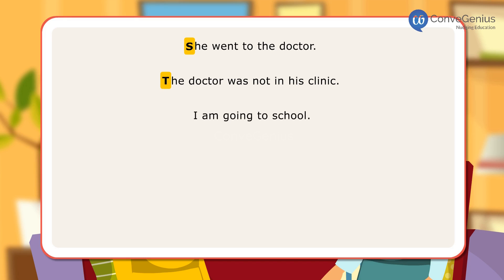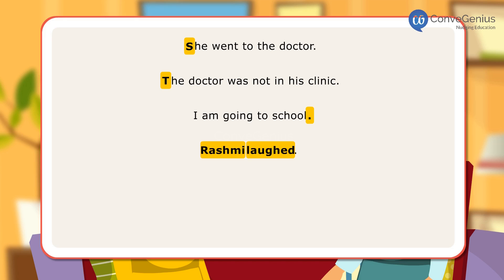There is always a punctuation mark at the end of a sentence. For example: I am going to school. A sentence has at least a subject and a verb. For example: Rashmi laughed. Subject: Rashmi. Verb: laughed.